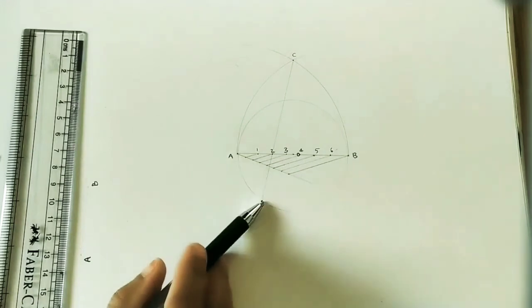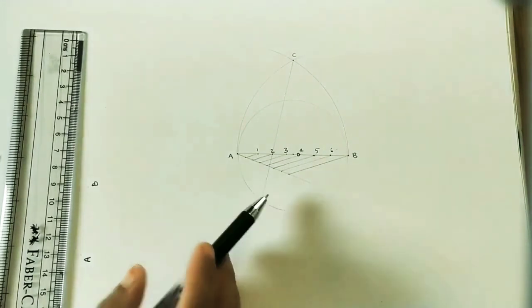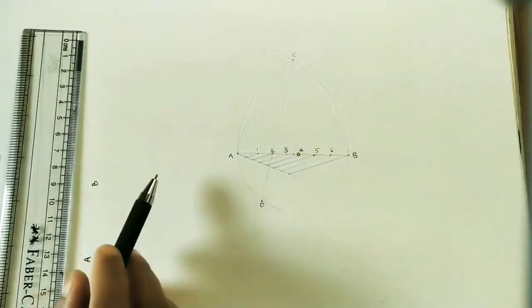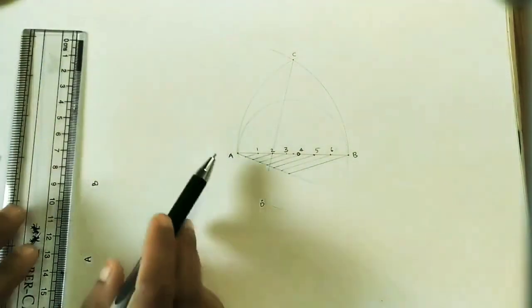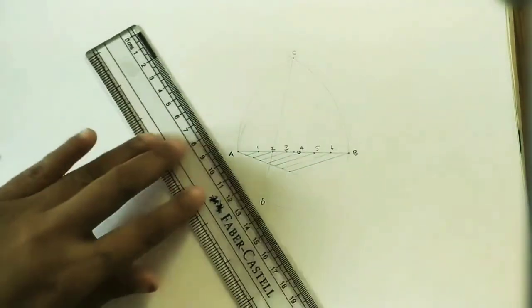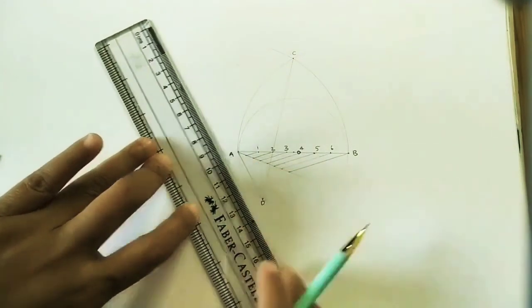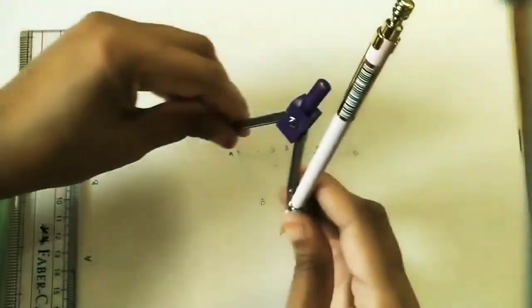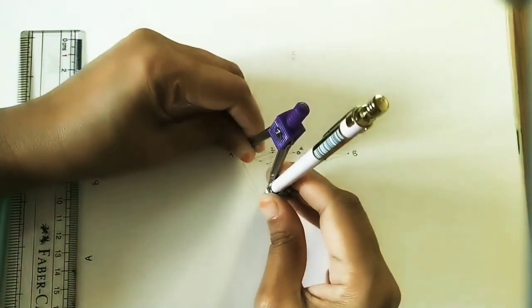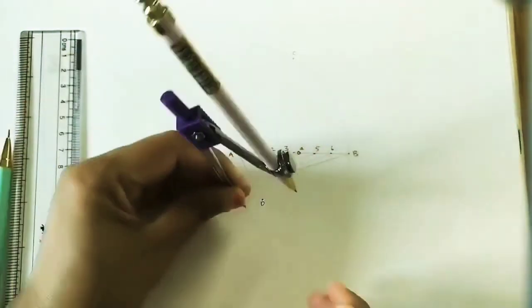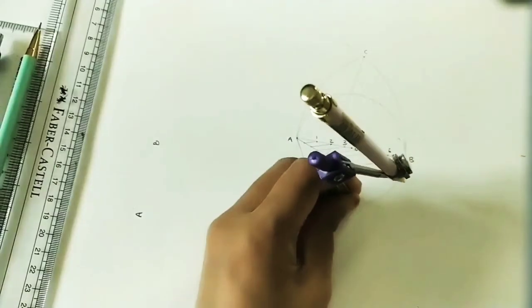Take this length and cut the circle into seven equal divisions. The AD length - join A and D. This is one of the sides of the heptagon. Take this radius and cut the circle into the remaining divisions.